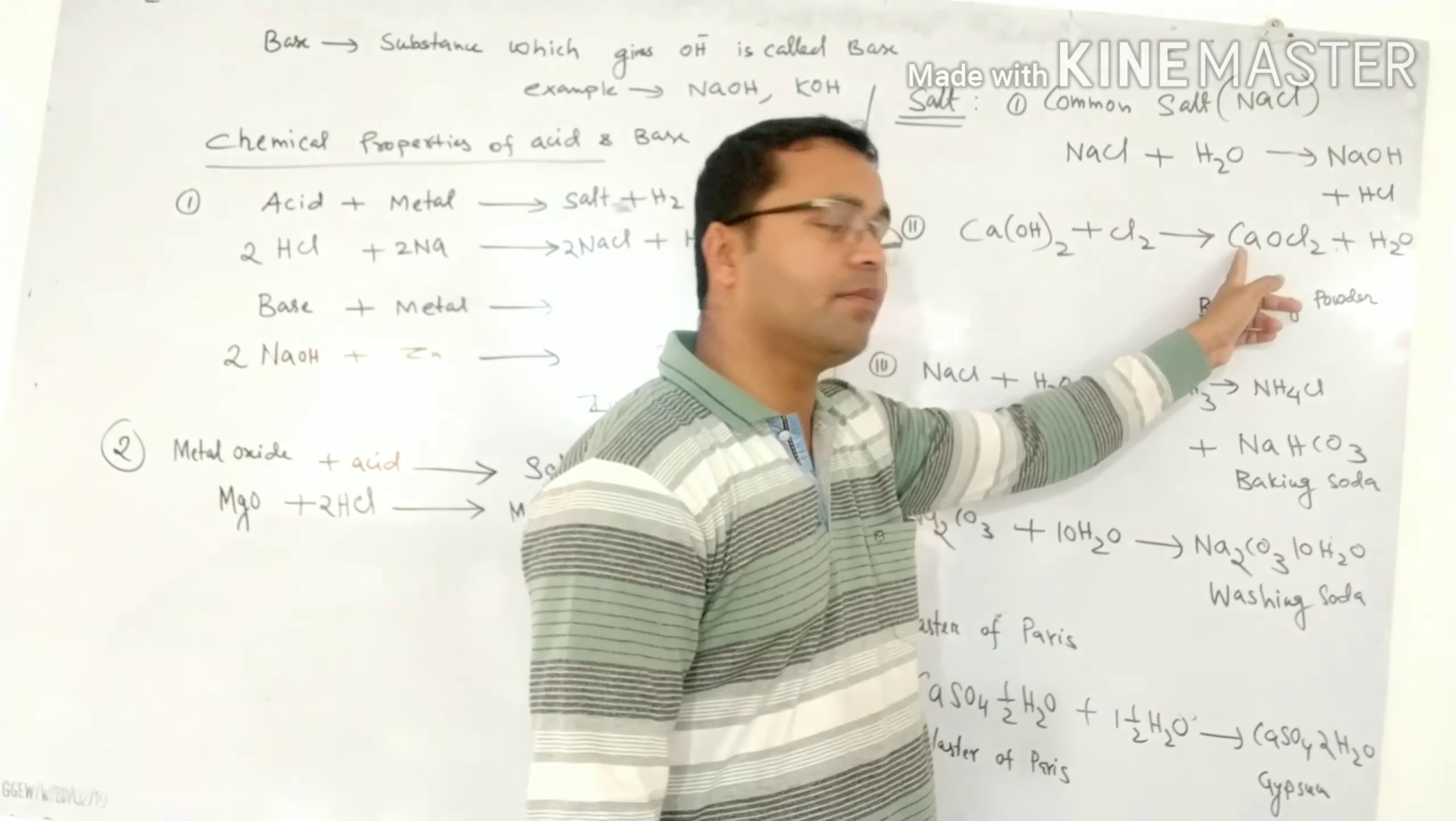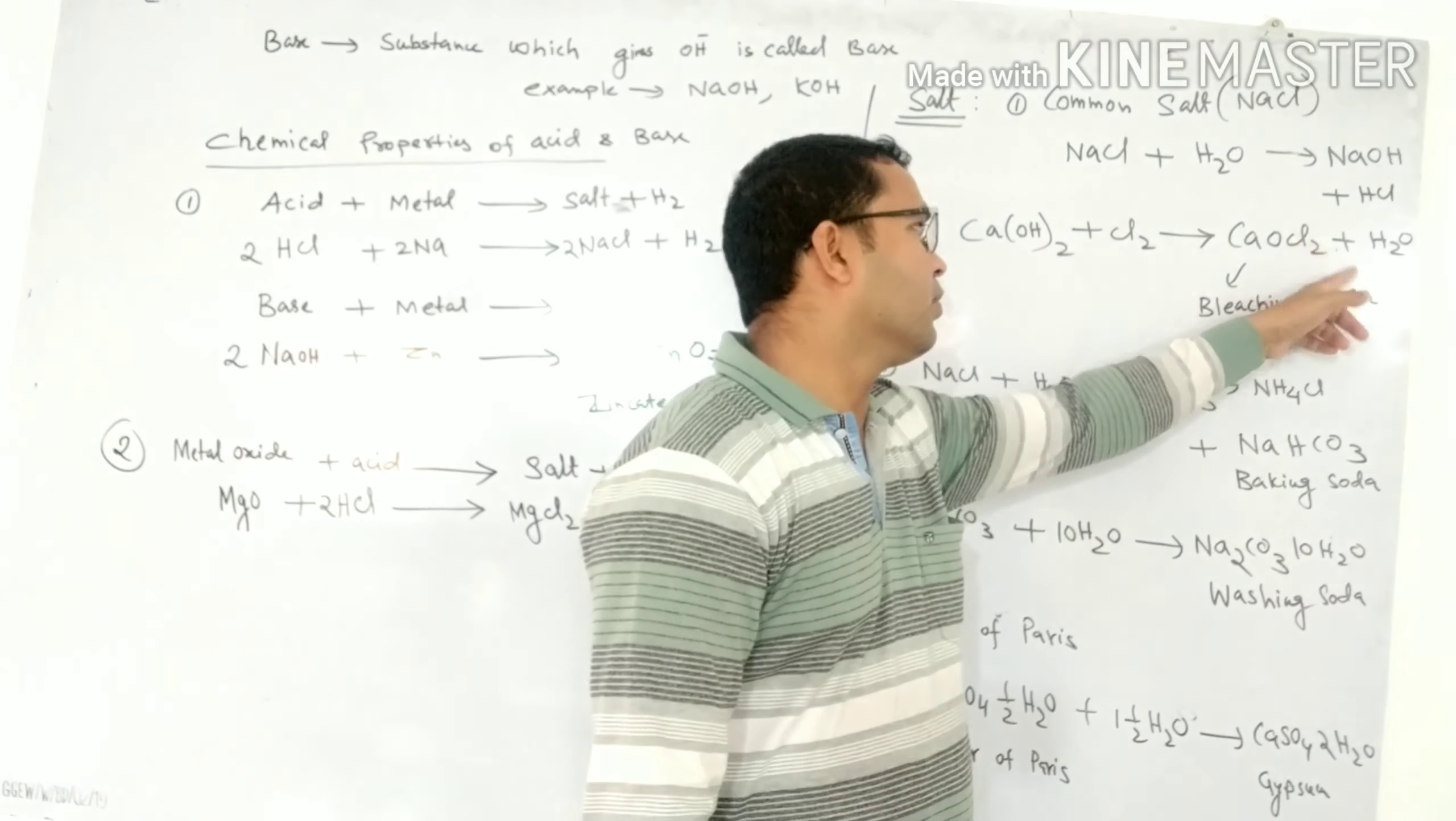Here the formula of bleaching powder is important: Ca, calcium, oxygen, chloride, Cl2.